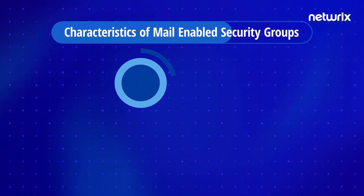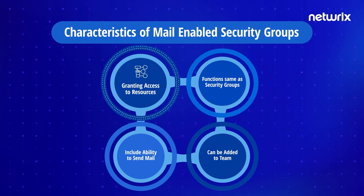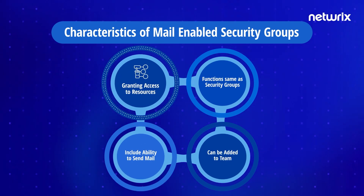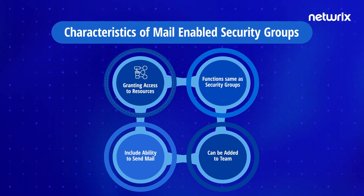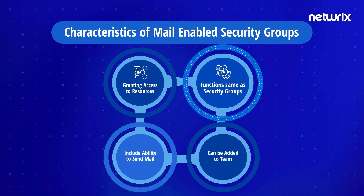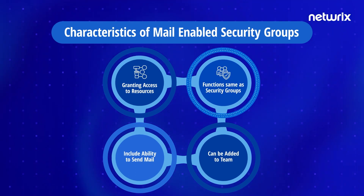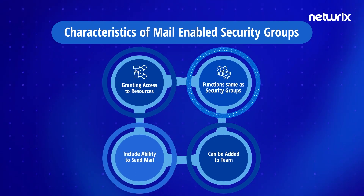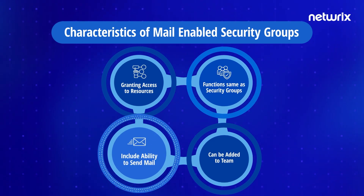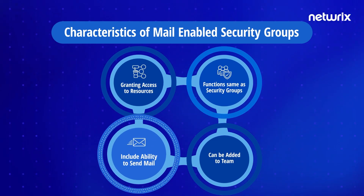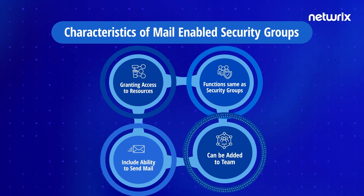Characteristics of mail-enabled security groups: mail-enabled security groups are used for granting access to resources such as SharePoint and emailing notifications to users. They function the same as regular security groups, except that they cannot be dynamically managed through Active Directory and cannot contain devices. They include the ability to send email to all members of the group, and mail-enabled security groups can be added to a team.